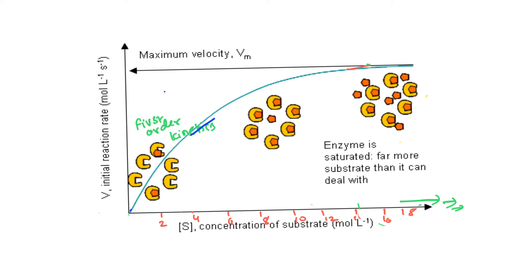The saturation point is referred to as Vmax — the maximum velocity of the enzyme. From Vmax, we take half of that value and interpolate that point to the reaction velocity curve, then bring it down to the x-axis.